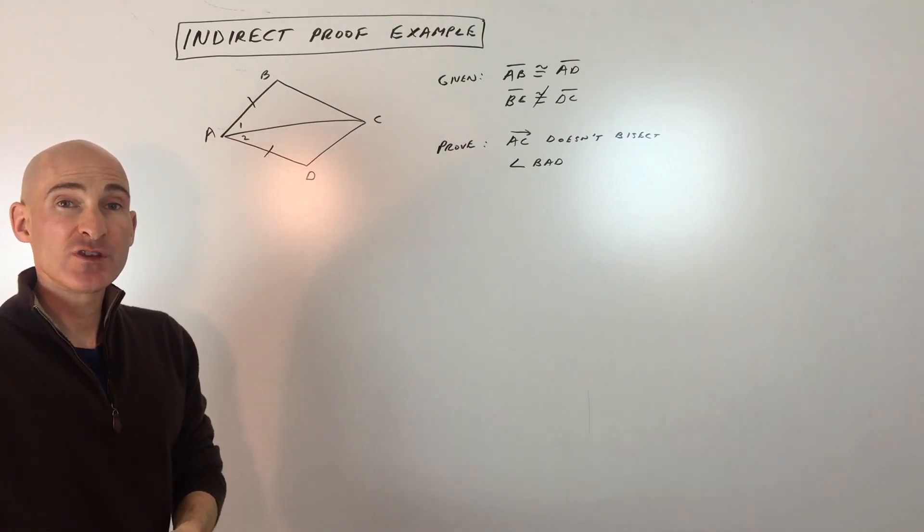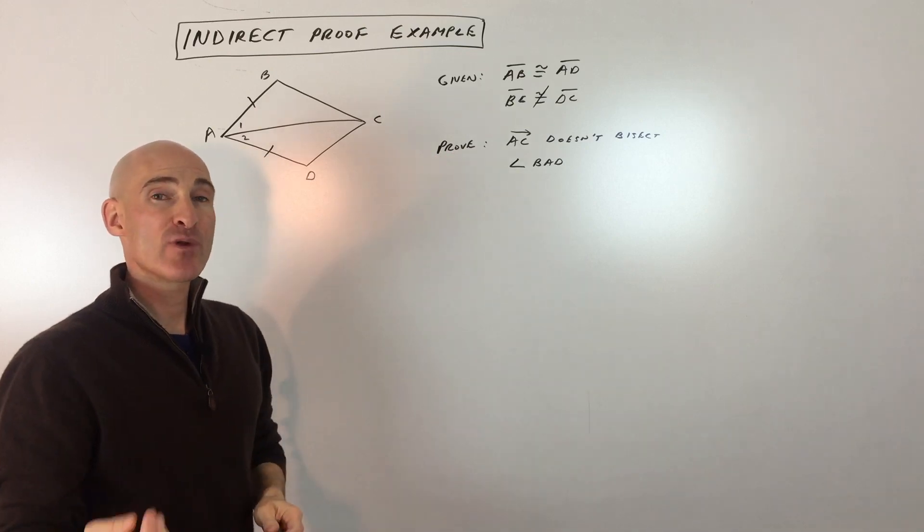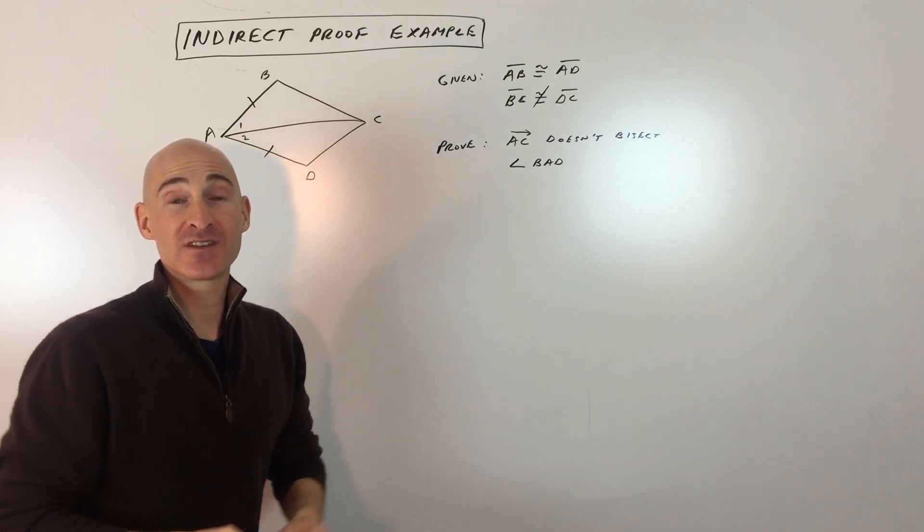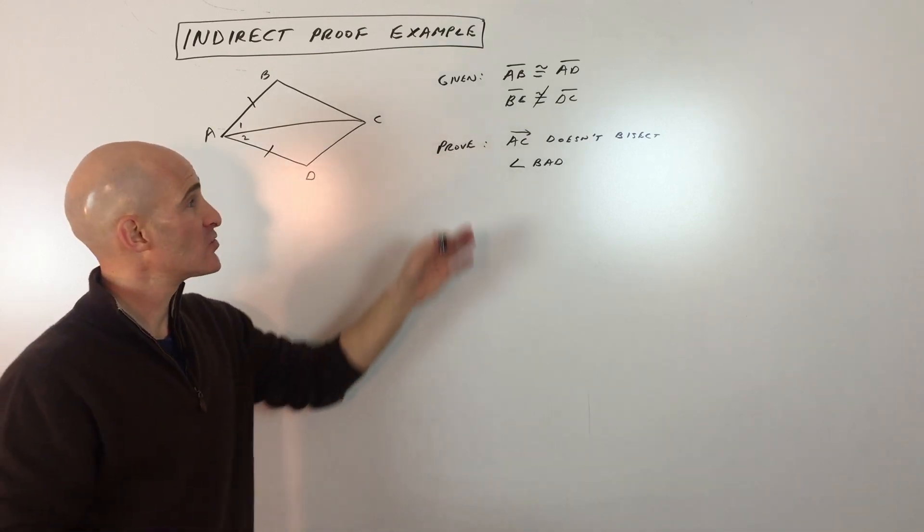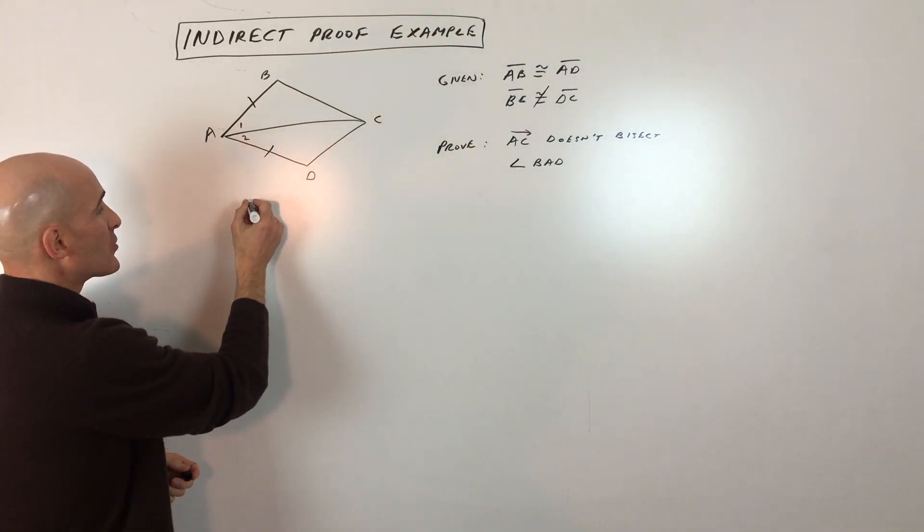When you do an indirect proof, the first thing you want to do is take what you're trying to prove and temporarily assume that the opposite is true. I'm just going to write this down.